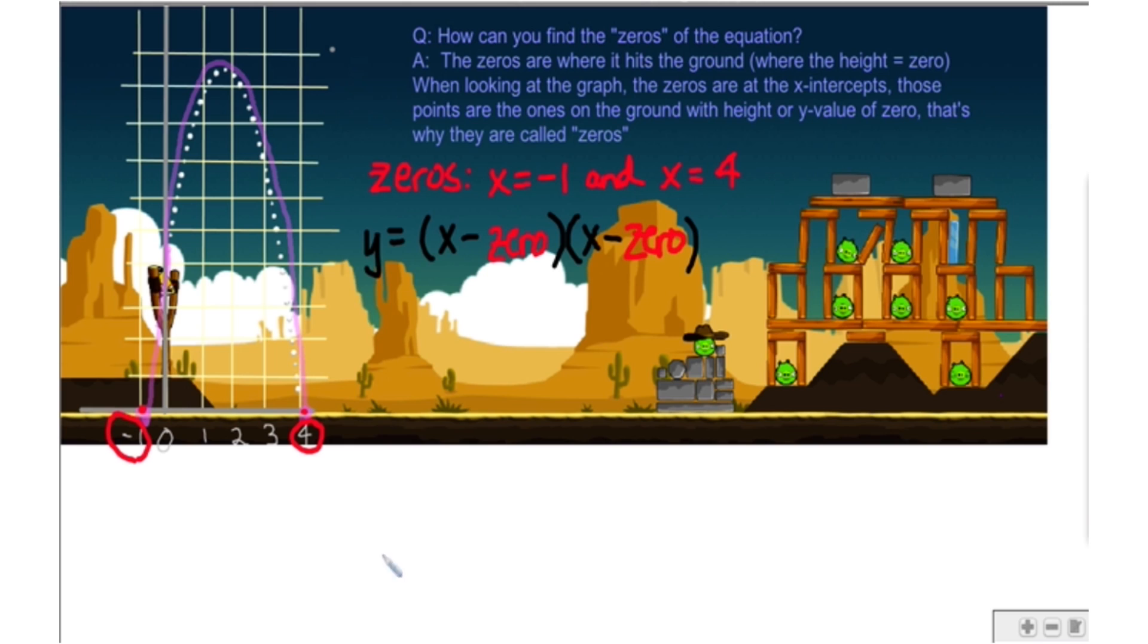So let's go ahead and do that for this problem. I have y is equal to x minus my first zero, which is negative 1, times x minus my second zero, which is 4. And then I could go ahead and kind of clean that up a little bit. This is going to be x minus a negative, same as adding. So x plus 1. And over here, I just have x minus 4.